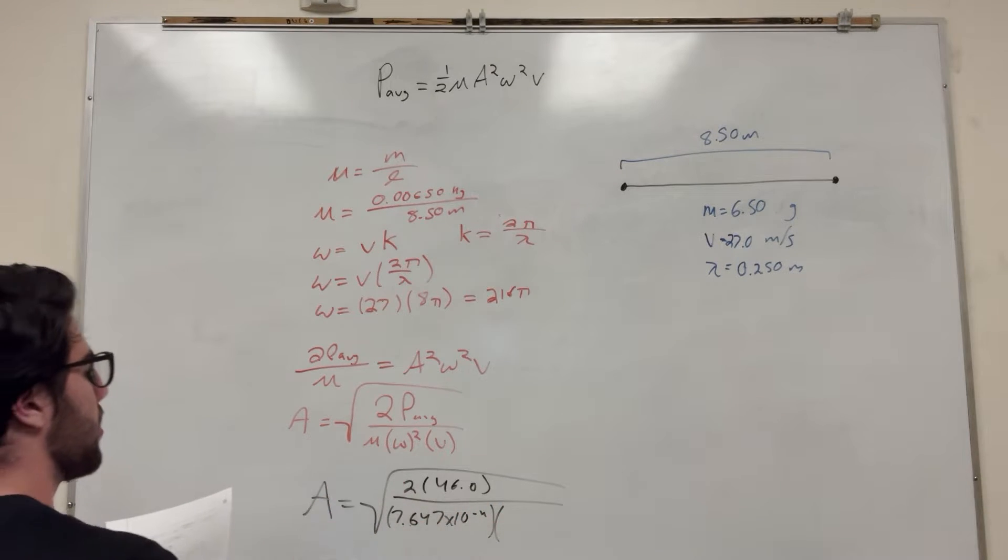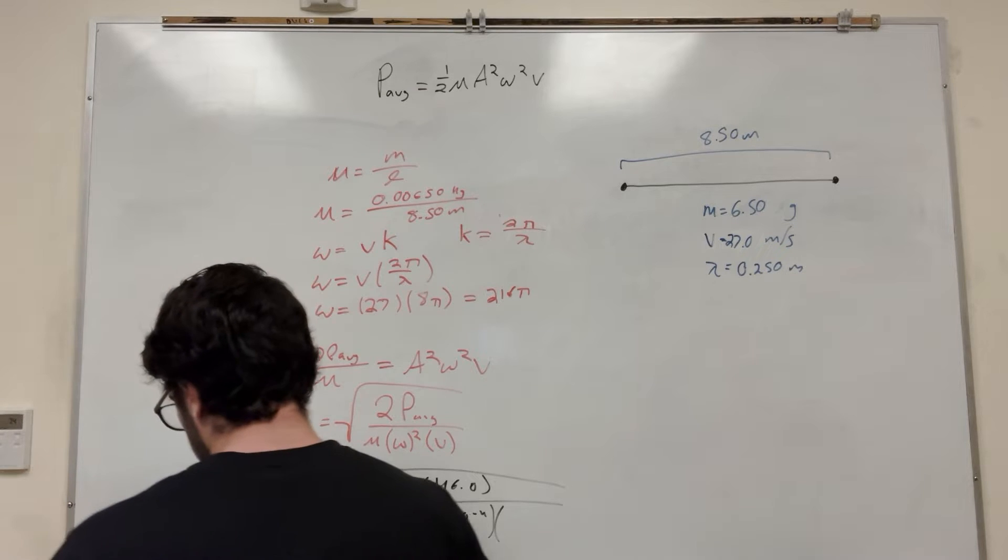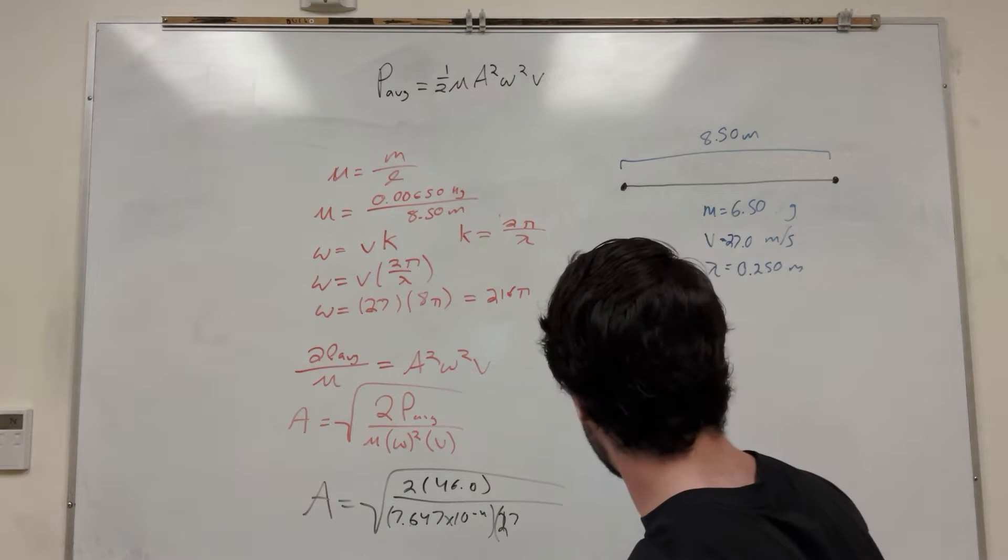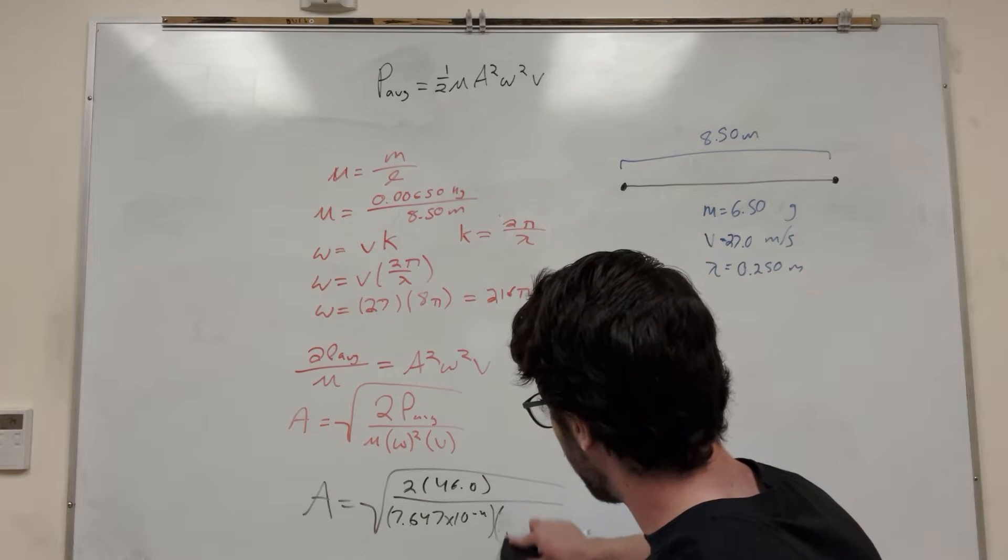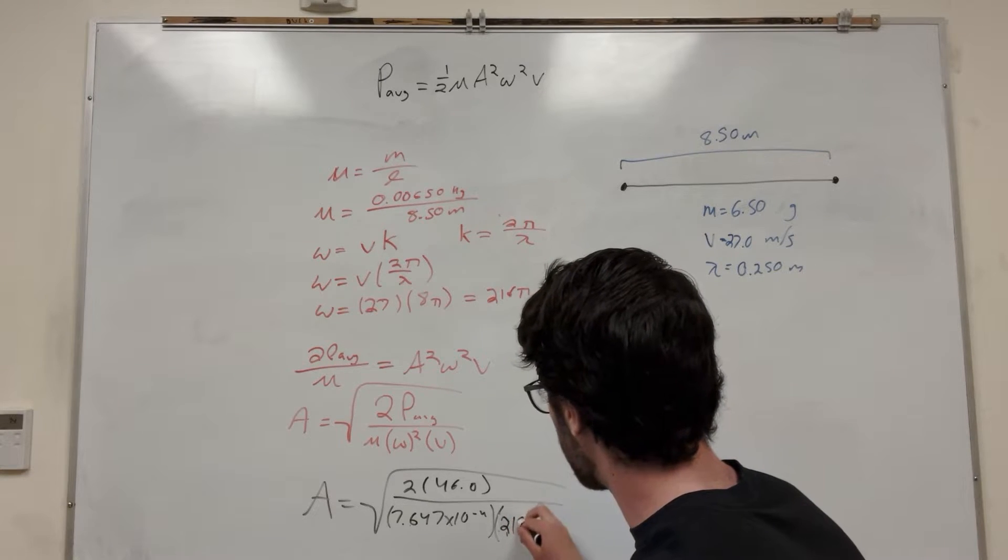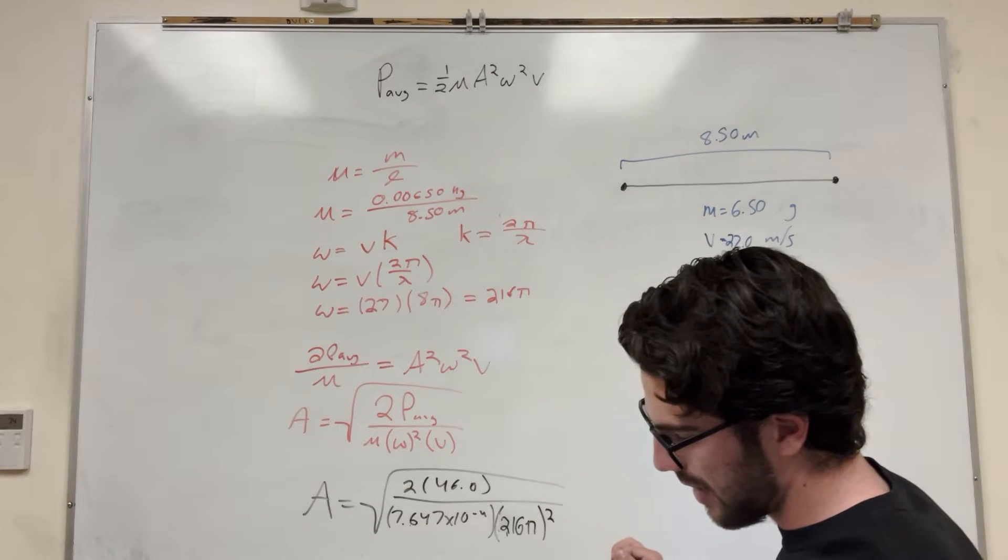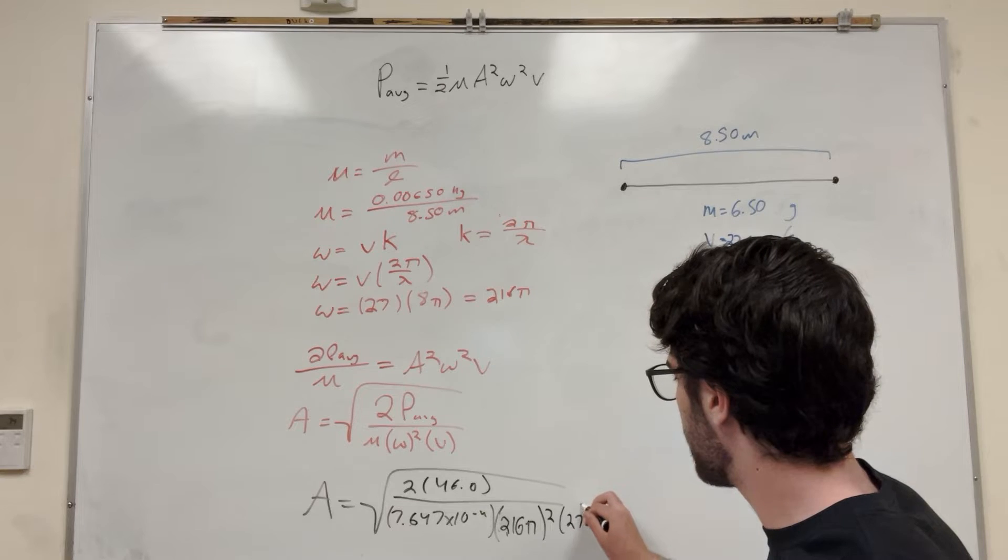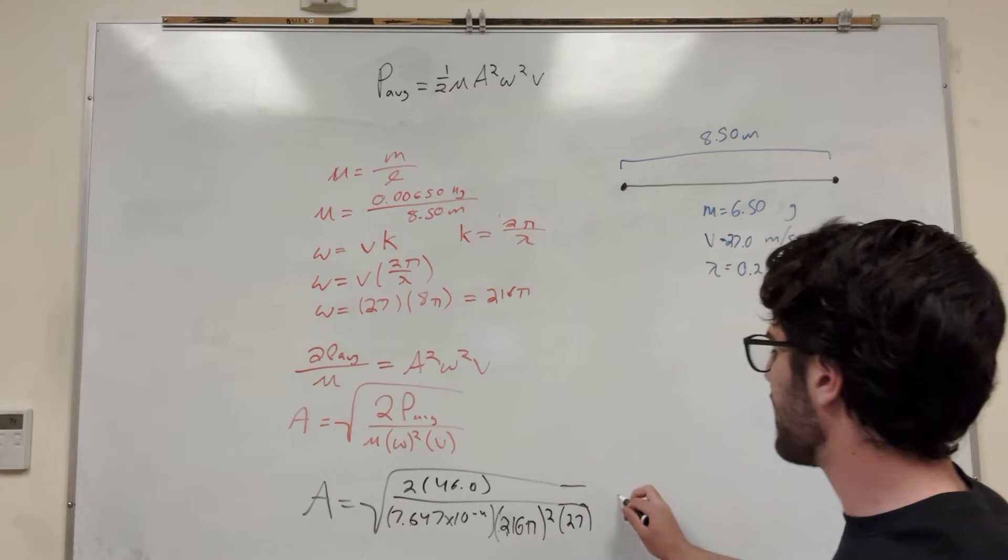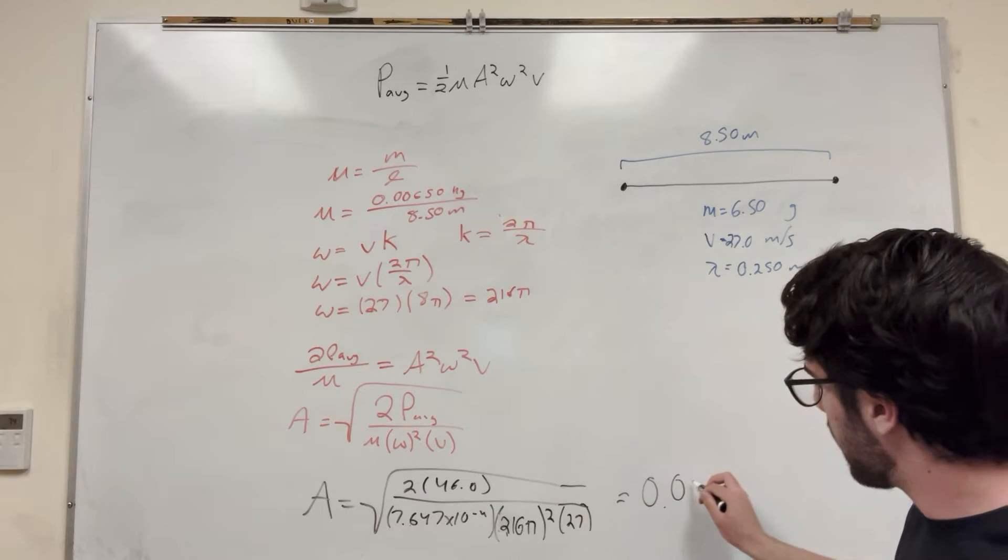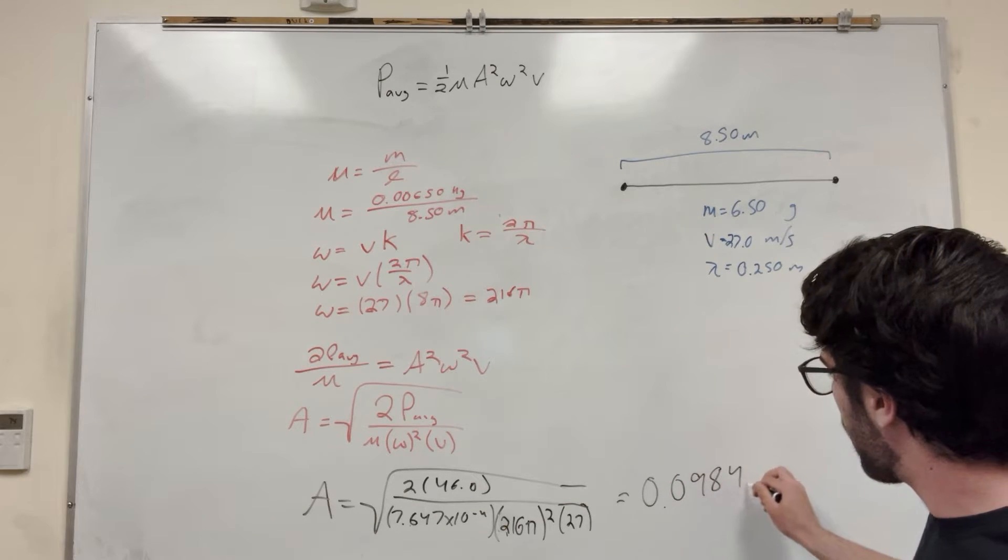So our W squared, that's going to be 216 pi squared—216 pi and squared all of that. Don't forget to square the pi. And then times just our velocity of 27. So we have this big equation, and if you plug it in, you're going to get amplitude of 0.0984 meters.